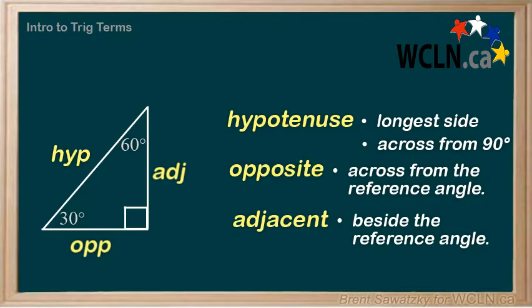To summarize: the hypotenuse is always the longest side, and it's always across from the 90-degree angle. It doesn't matter what angle we use as a reference — the hypotenuse is always the hypotenuse. The opposite and adjacent sides, on the other hand, depend on which angle we're using as the reference angle. The opposite side will always be across from the reference angle, and the adjacent will be the remaining side, beside the reference angle. If we switch our reference angle, the opposite and adjacent sides get switched, but the hypotenuse will always stay the same.